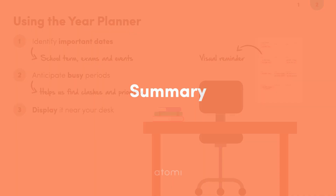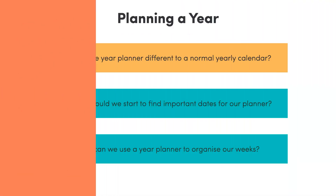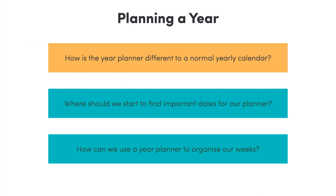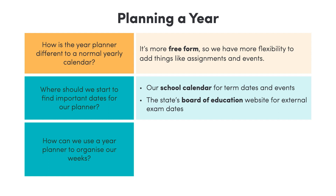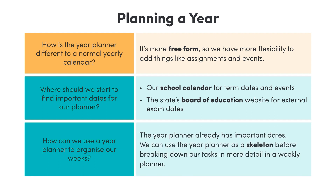Let's wrap up. This video talked about how we can use a yearly planner to anticipate important events and remember them as they come up. Feel free to answer these questions to refresh your memory. The yearly planner is different from a normal yearly calendar as it's more freeform, which means we have more flexibility to add assignments, events and important to-do lists. A good place to identify important dates is the school calendar or the state's Board of Education website for things like exam dates. We can use our yearly planners to create a more detailed outline of our week — it already has our important events, so we can use this as our skeleton before breaking down our tasks further in our weekly planner.